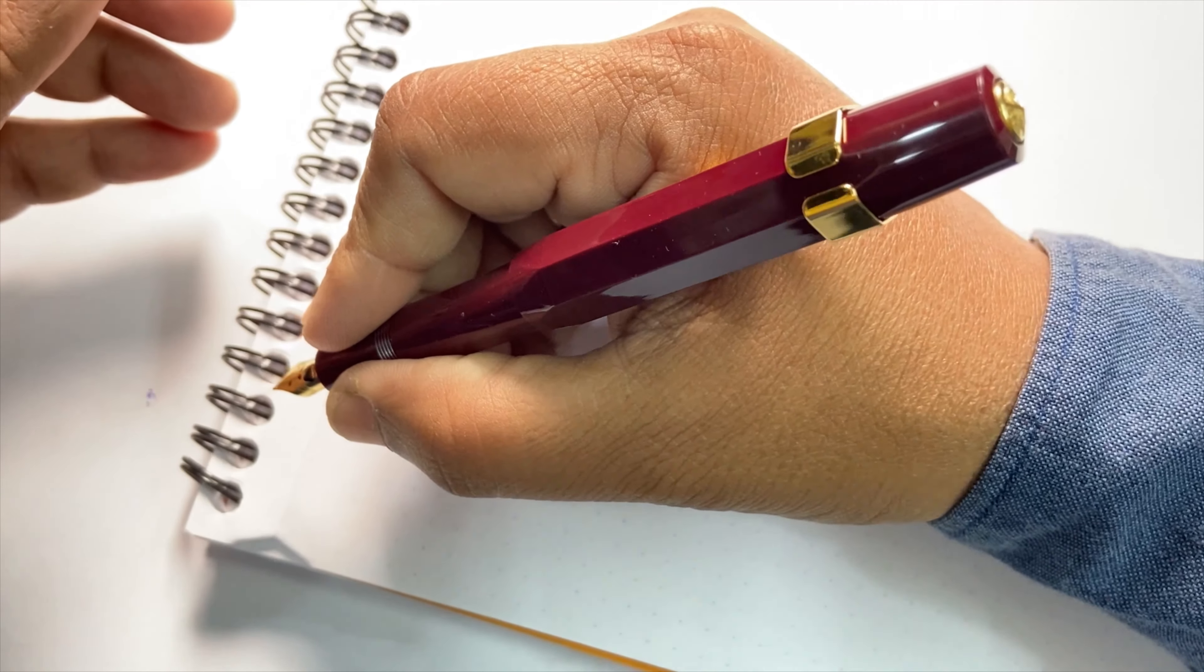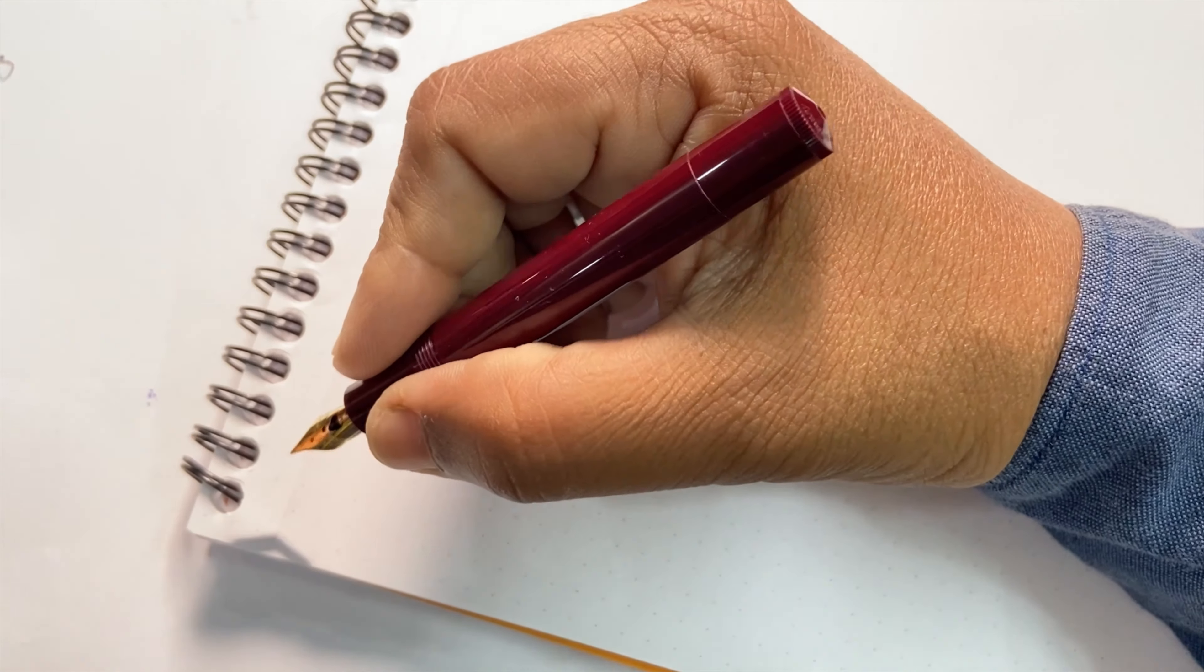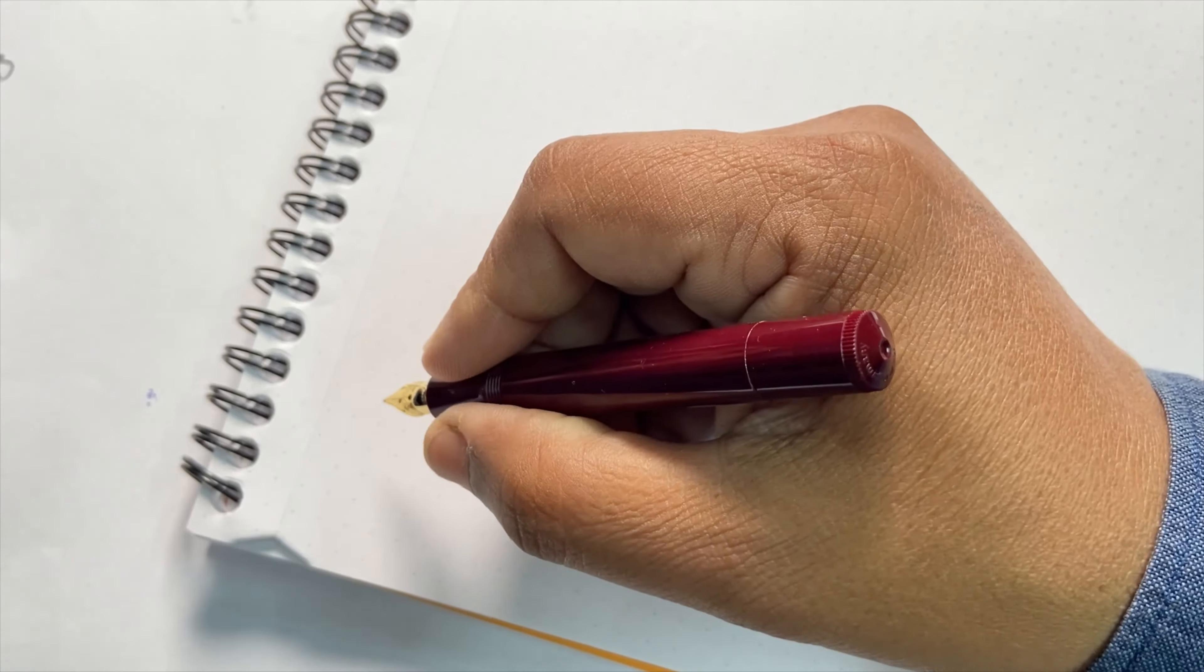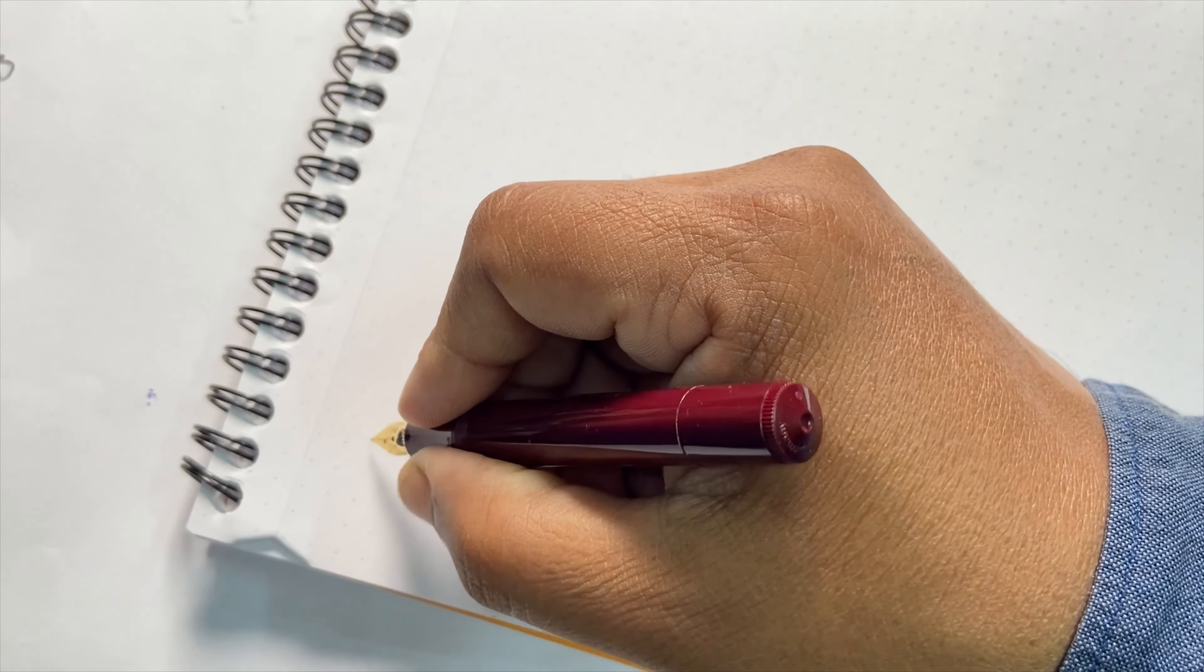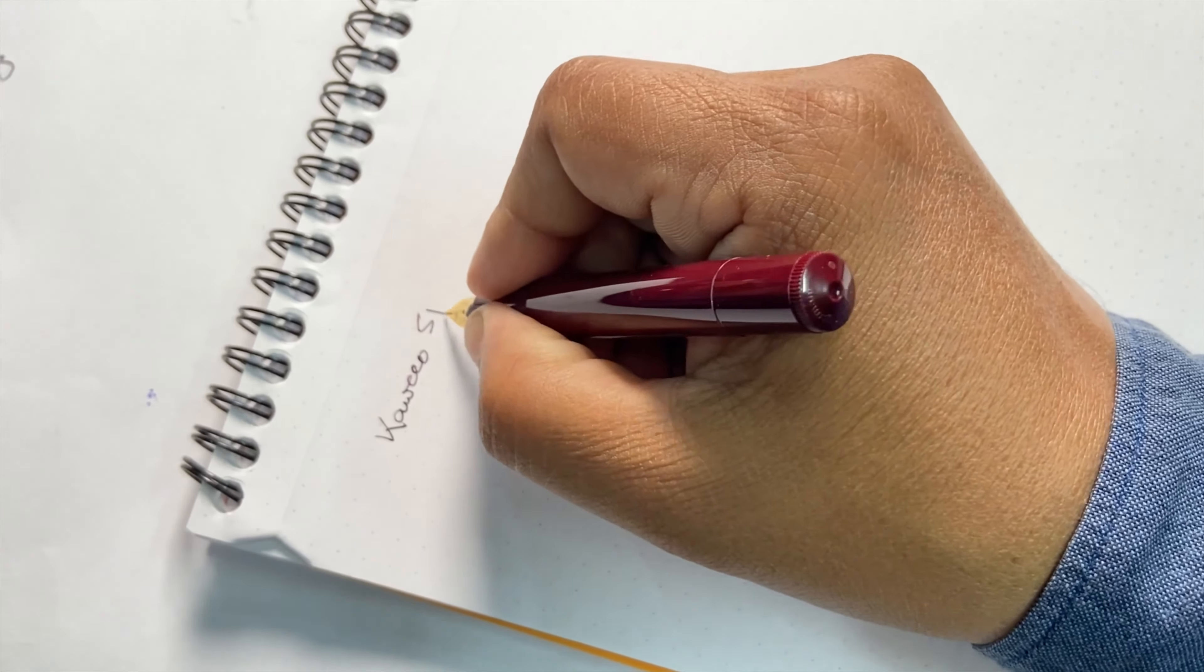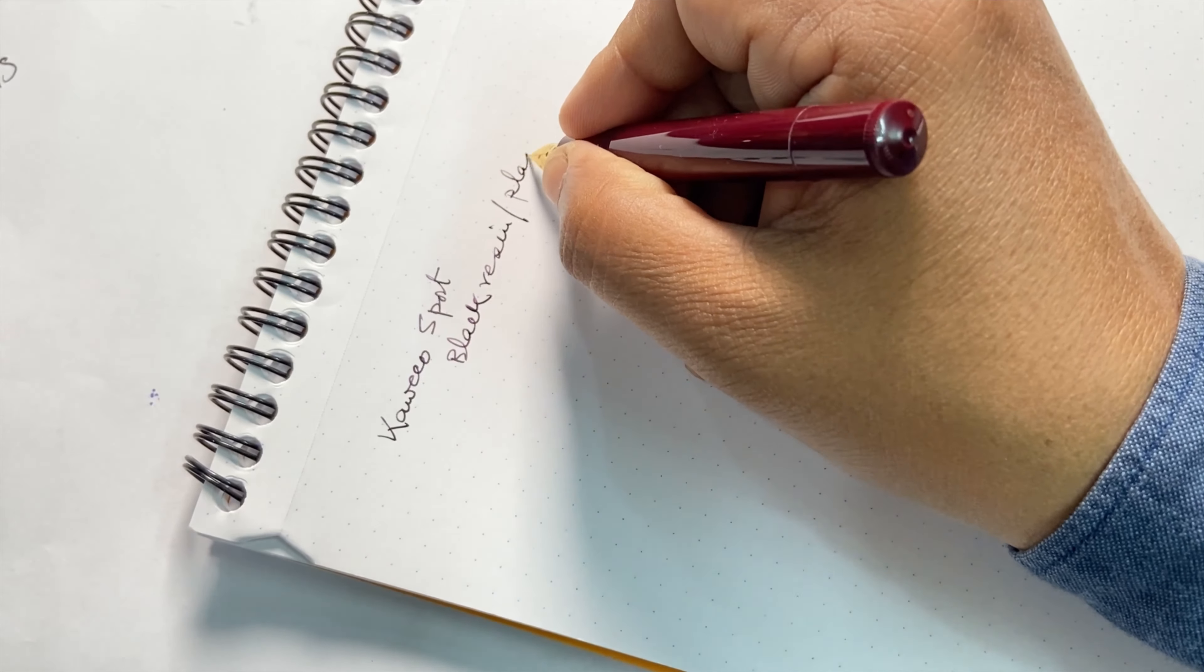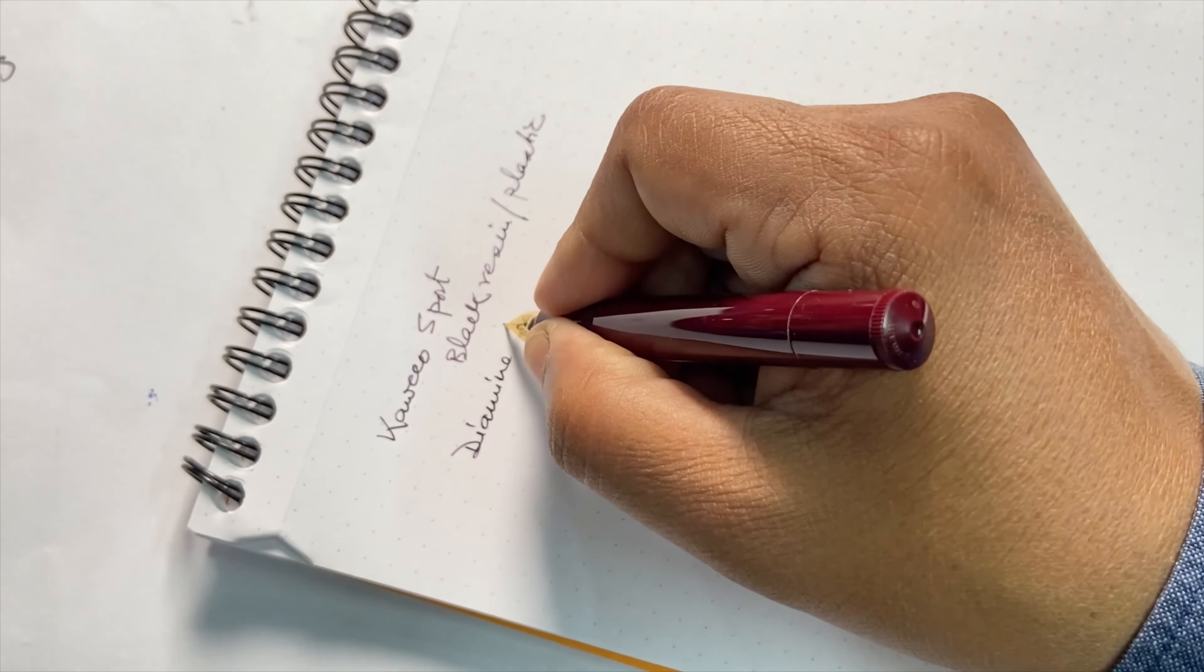But in case one wishes, one can easily post it to this extent—especially for medium or large hands or those who usually write posted. But I won't use it posted, and I'm now taking a writing sample. This is a fine nib that I have, and the color is Diamine Damson. So this is Kaweco Sport series in black resin or plastic, and the ink is Diamine Damson.